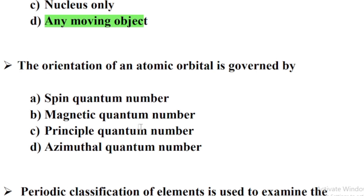The orientation of an atomic orbital is governed by — Option B: Magnetic quantum number.